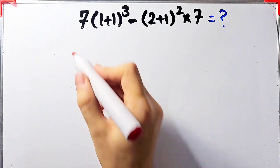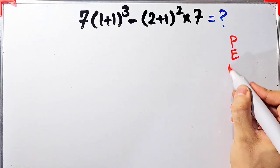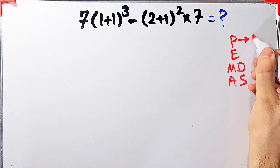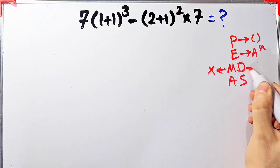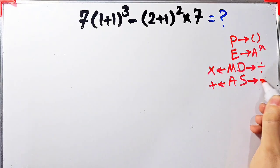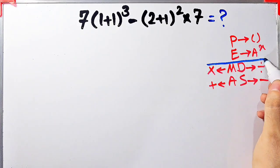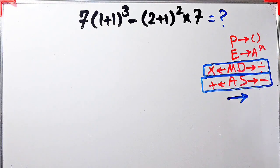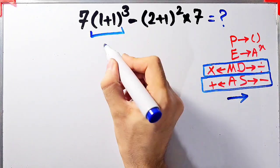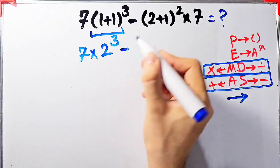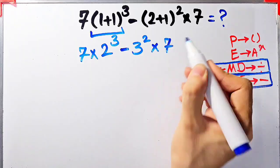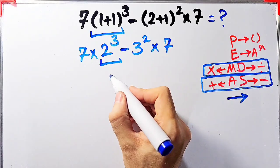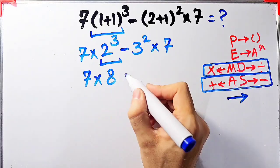To solve this question correctly we follow the PEMDAS rule. P stands for parentheses, E for exponent, M for multiplication, D for division, A for addition, and S for subtraction. Multiplication and division have the same level of priority; addition and subtraction also share the same level of priority, and when we have both we start from the left. First we simplify the parentheses: 1 + 1 = 2, and 2 + 1 = 3. Now we have 7 × 2³ − 3² × 7. We simplify the exponents: 2³ = 8 and 3² = 9.